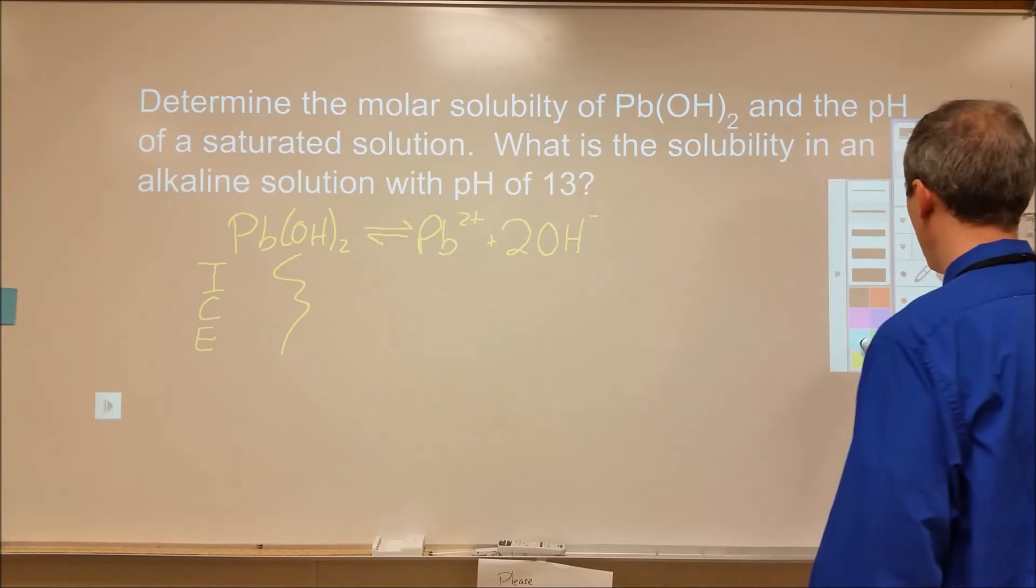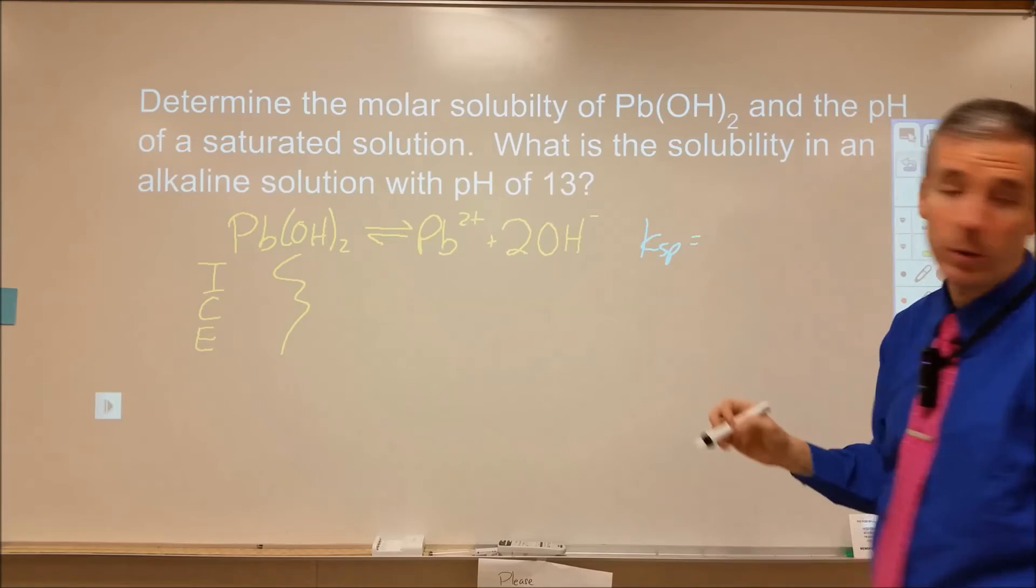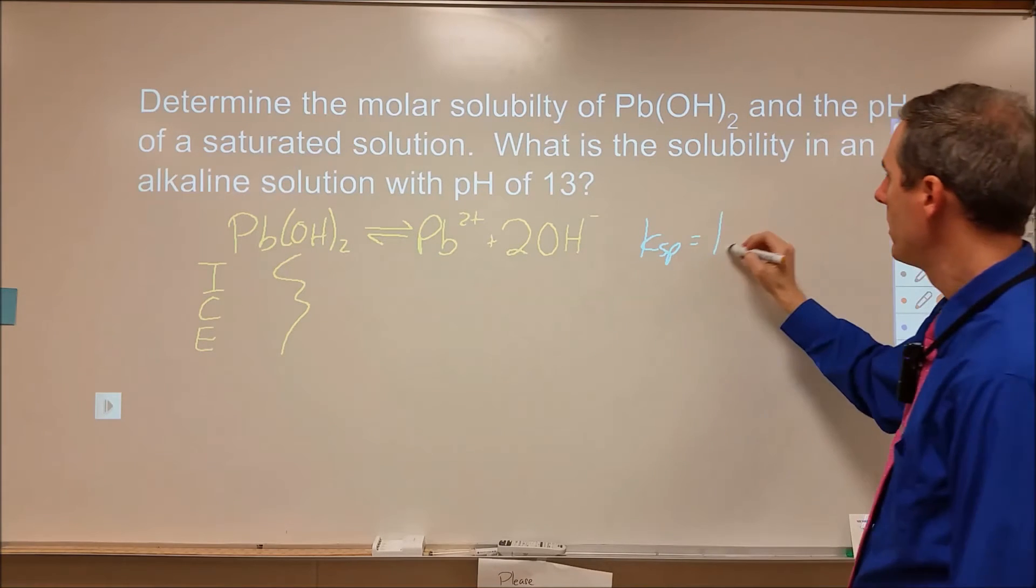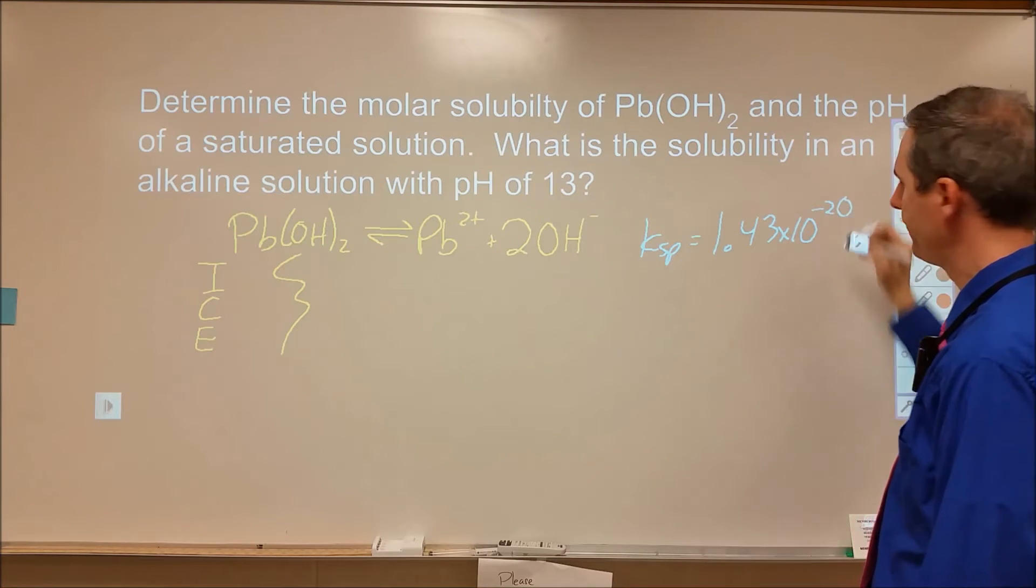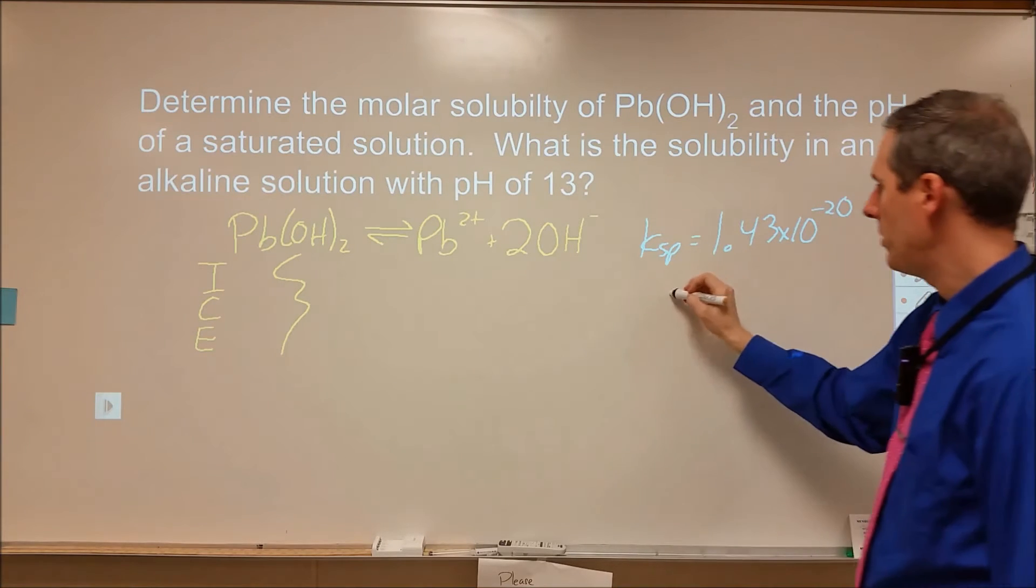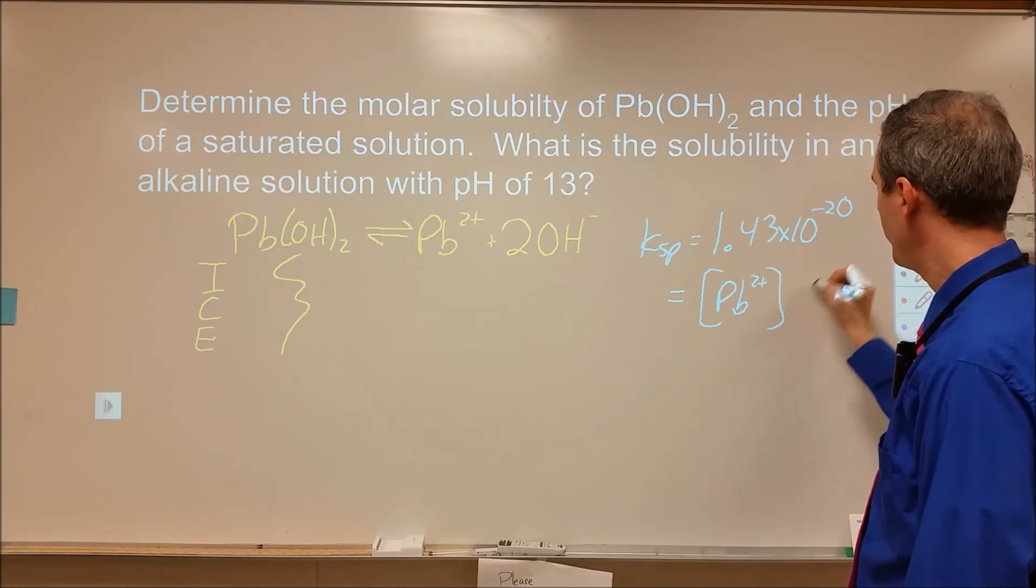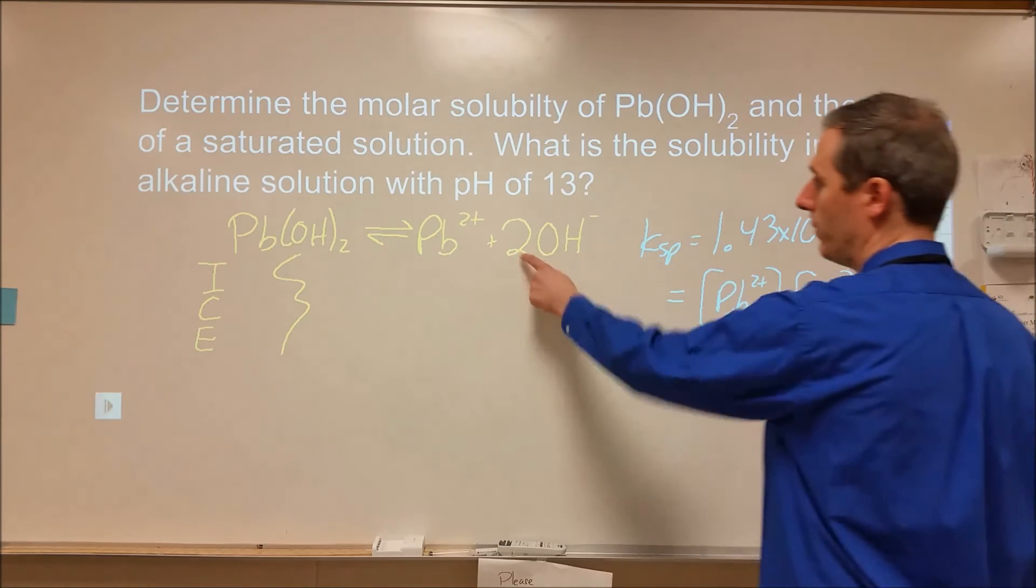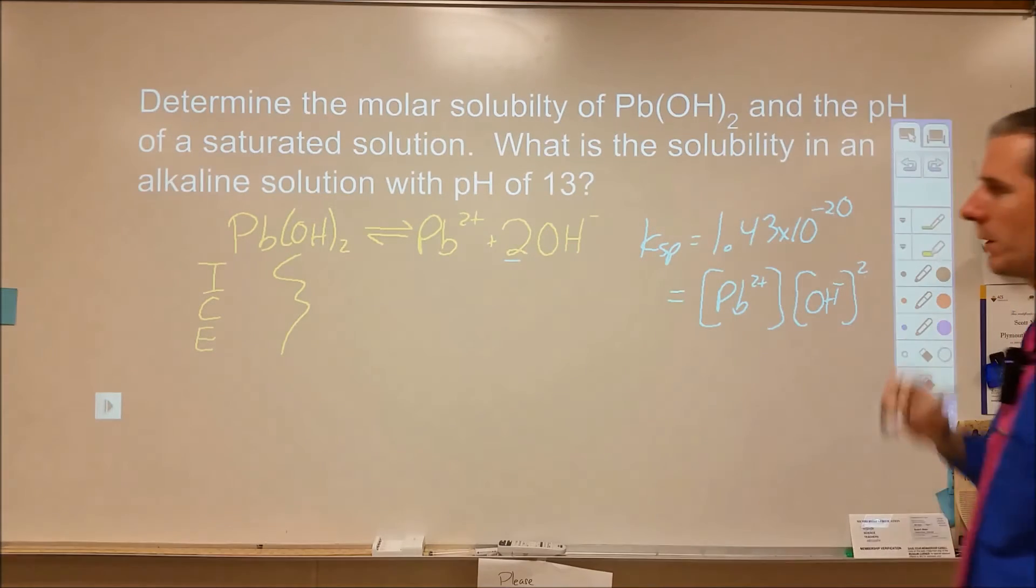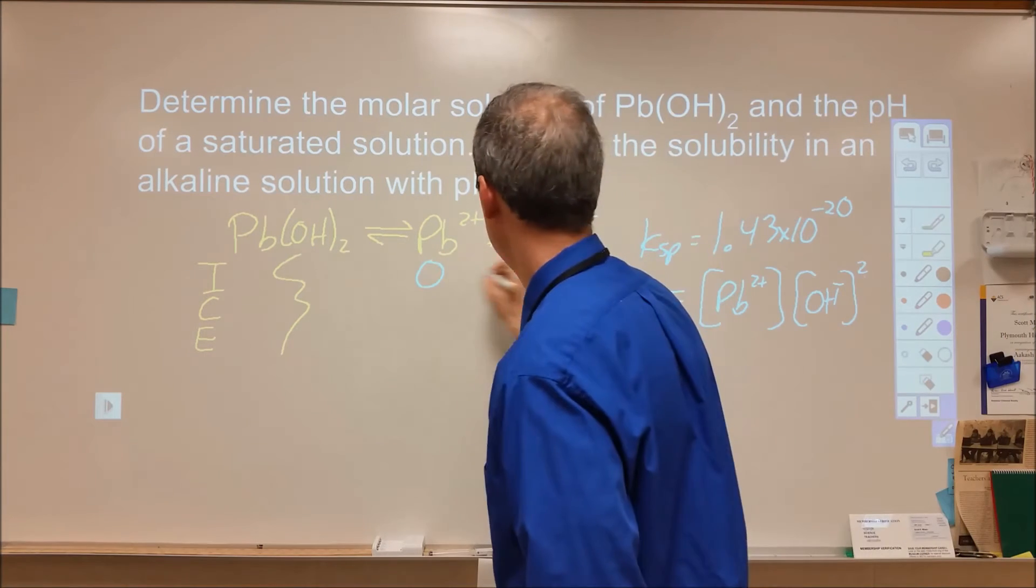We need to look up what our KSP value is. We go to our chart and it turns out it is 1.43 times 10 to the negative 20th. That's going to be equal to our lead concentration. However, this time our hydroxide ion concentration needs to be squared because it has a coefficient of 2. This 2 becomes that exponent there. Let's set up our ICE chart. We know we start with 0 of each of these.